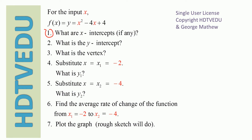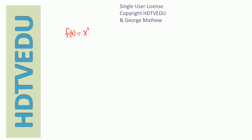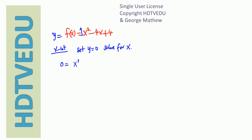For question number one, what are the x-intercepts if any? Our function is f(x) equals x squared minus 4x plus 4. When nothing is written next to x squared it usually means 1x squared. For x-intercepts, set y equal to 0 and solve for x. So y equals 0 means f(x) equals 0, giving us 0 equals x squared minus 4x plus 4.